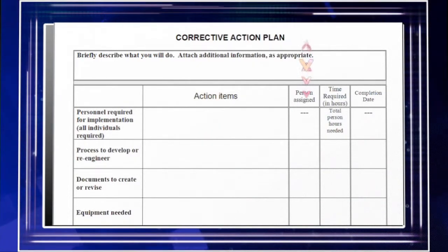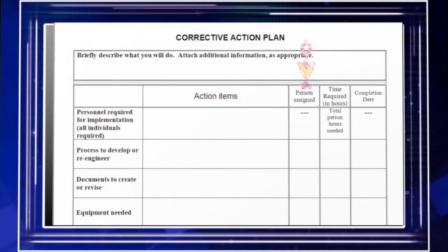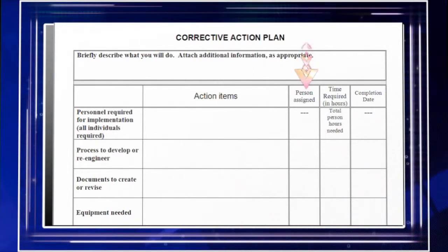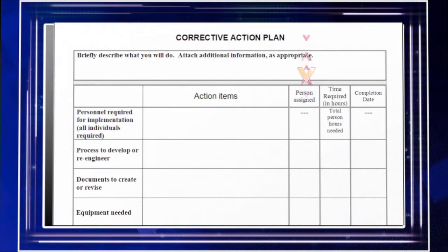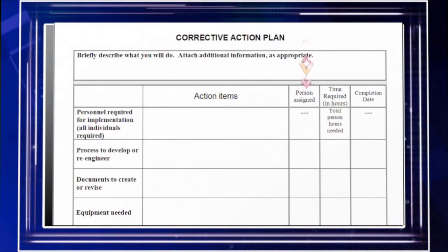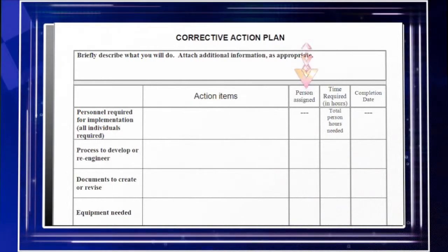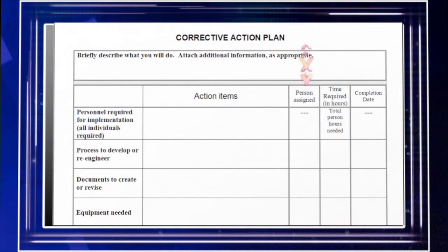In this column here, you're going to put the persons that you need to have involved. You need to identify those individuals and make sure that you get their authorization and their permission before you put their name on this corrective action plan.